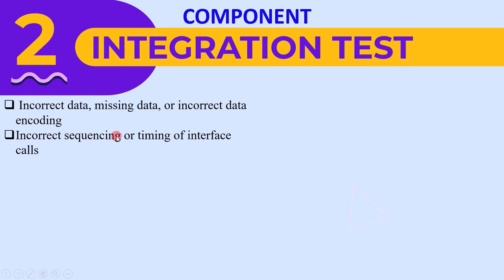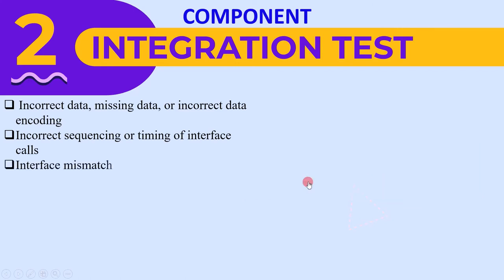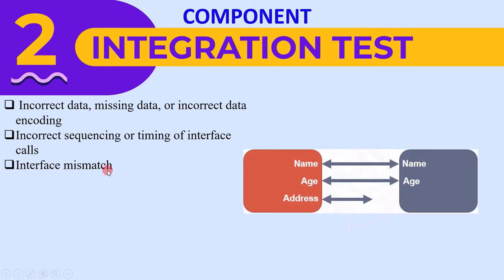The next defect is incorrect sequence or timing of interface calls. For example, if one module is sending data in 100 milliseconds while another is accepting data in 10 milliseconds, data will be lost since the timing is different. We can find such errors during integration testing. Next is interface mismatch.